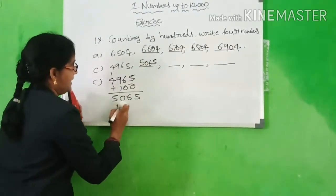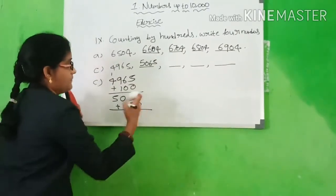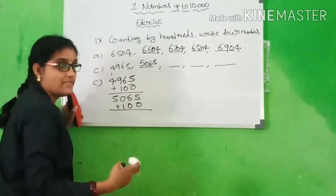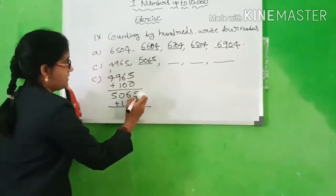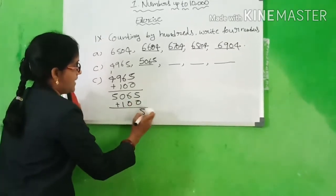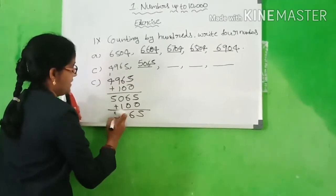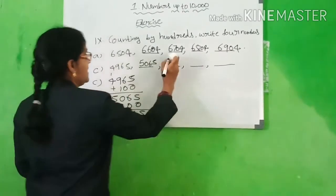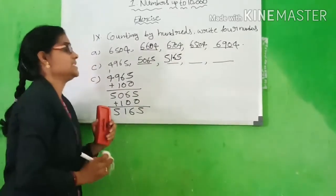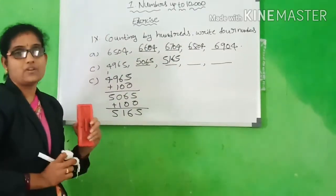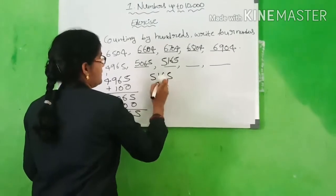Next, add 100 to 5,065. Which number will we get? 5 plus 0 is 5, 6 plus 0 is 6, 0 plus 1 is 1, 5. What is the answer? 5,165.